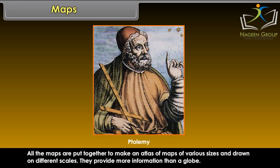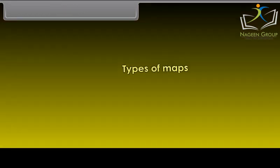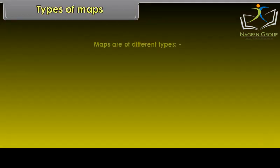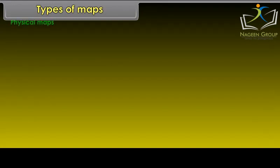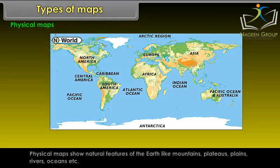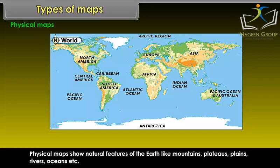Maps provide more information than a globe. Maps are of different types. Physical Maps show natural features of the earth like mountains, plateau, plains, rivers, oceans, etc.